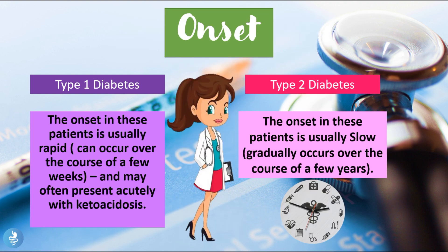Regarding onset: in type 1 diabetes the onset is usually rapid and can occur over the course of a few weeks, and may often present acutely with ketoacidosis. In type 2 diabetes the onset is usually very slow and gradually occurs over the course of a few years.